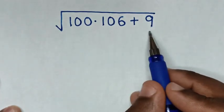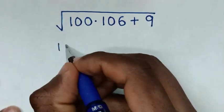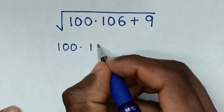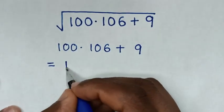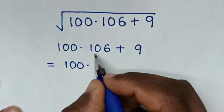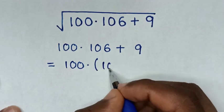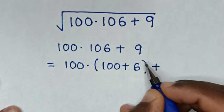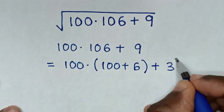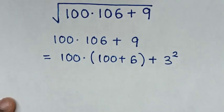So from this expression under square root, which is 100 times 106 plus 9 is equal to this: 100 times 106 is same as 100 times (100 plus 6) bracket, then plus 9 is same as 3 squared. Then in the next step,